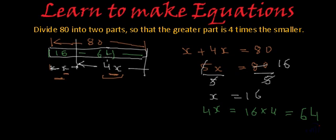And do they add up to 80? Yes, 4 plus 6, 0, 1 carried forward, 6 plus 1, 7 plus 1, 80. So the two parts will be 16 and 64. So this is our solution, x equal to 16, which is the smaller part and the greater part is 64.